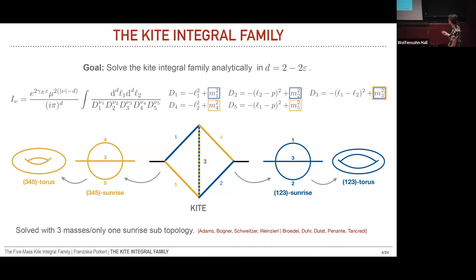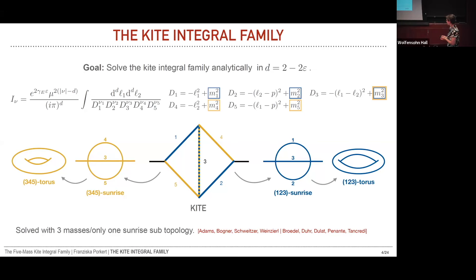We want to solve this in two minus two epsilon Euclidean dimensions. To see the emergence of the two elliptic curves, note that there are two sunrise sub-topologies in this kite integral family. One has propagators one, two, three, and the other has propagators three, four, five, where labels again denote the masses that appear. The massive sunrise integral is related to an elliptic curve isomorphic to a torus, so through these two distinct sunrise sub-topologies, we obtain two elliptic curves. The kite integral was solved analytically for the case where two masses vanish, but never in full generality with both torii present.